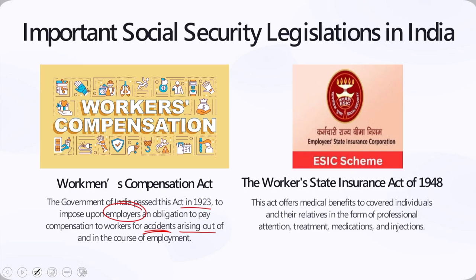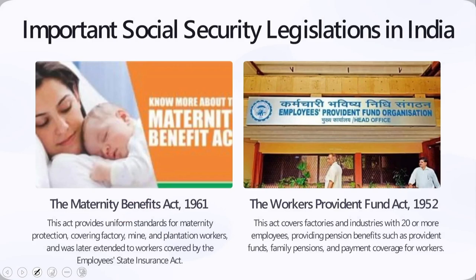Among other important social security legislations, we have the Maternity Benefits Act of 1961. The government of India enacted this act to provide uniform standards for maternity protection. It was implemented in the first instance to all factories, plantations, mines, and workers except those covered by the Employee State Insurance Act. The act was later extended and amended in 1976 to include workers covered by the ESI Act as well, giving benefits to the entire workforce.